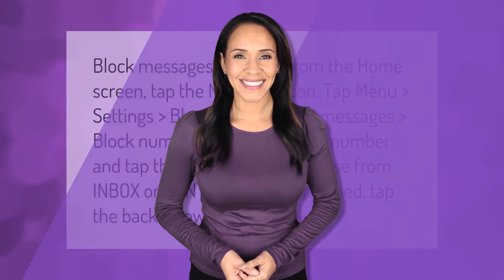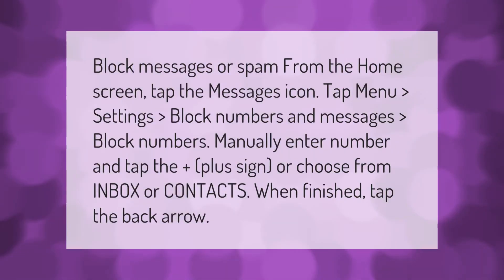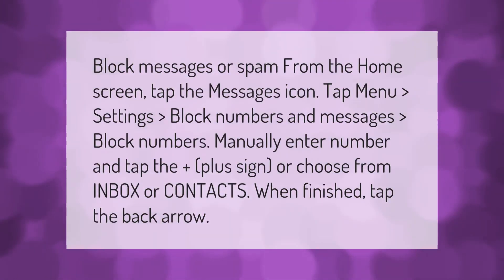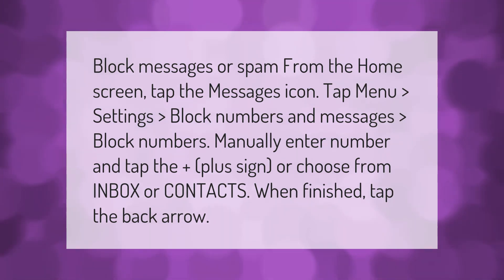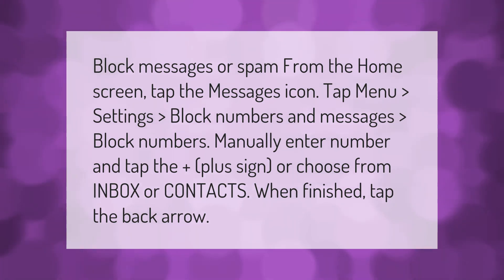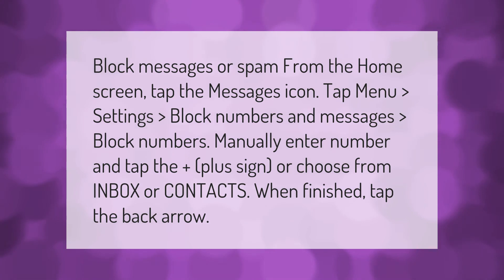To block messages or spam from the home screen, tap the Messages icon, then tap Menu, then Settings, then Block Numbers. You can block numbers manually by entering a number and tapping the plus sign, or choose from your inbox or contacts.